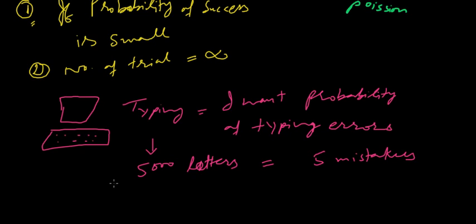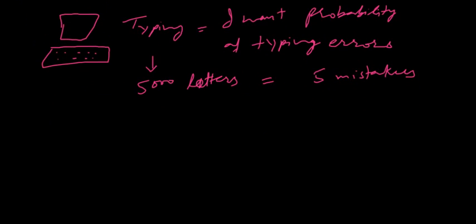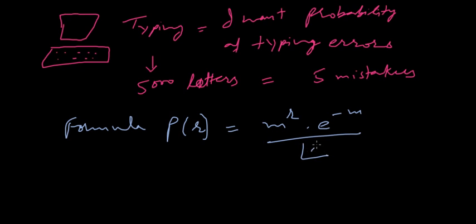So Poisson distribution uses logarithm and its formula for calculating probability of success of any trial is m to the power r, multiply e to the power minus m, over r factorial. And e here is the base of natural logarithms.